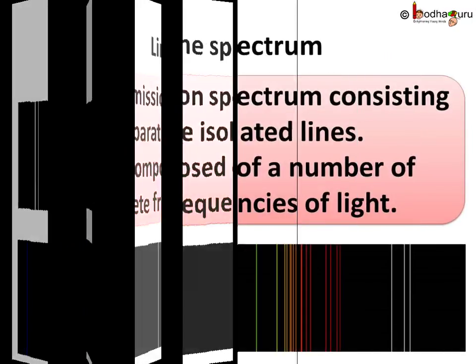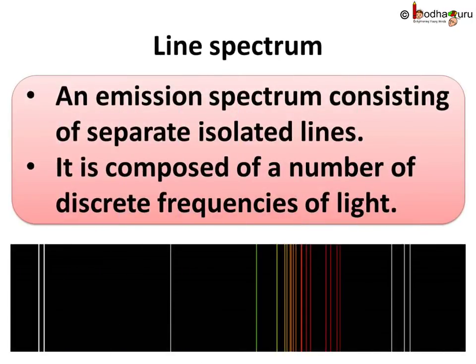To sum up what we learnt today: what is line spectrum? It is an emission spectrum consisting of separate isolated lines, and the line spectrum is composed of a number of discrete frequencies of light.